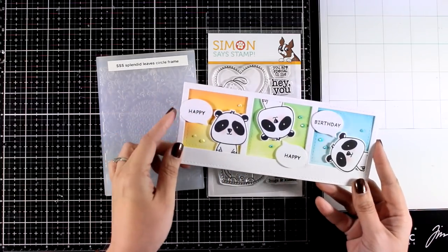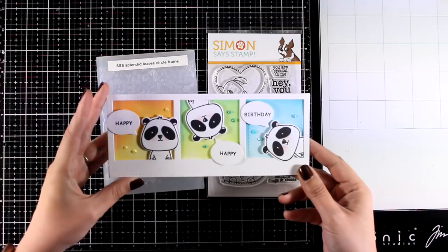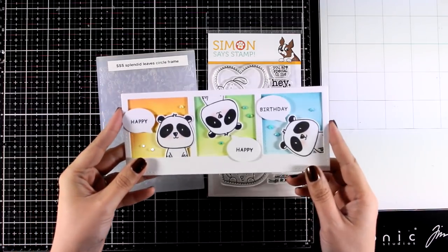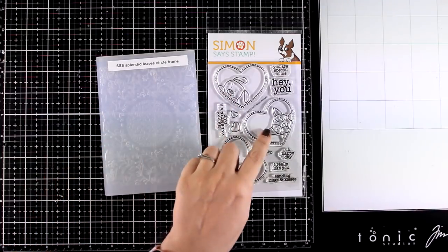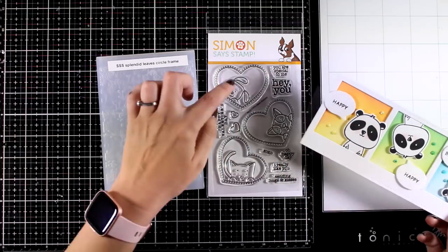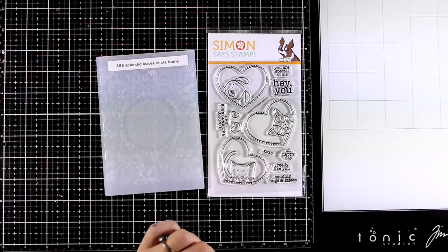You can have three little windows and have all those three animals popping through them. This is a slimline card and of course there is a die that matches the hearts so you can cut out heart windows and have those animals pop through.